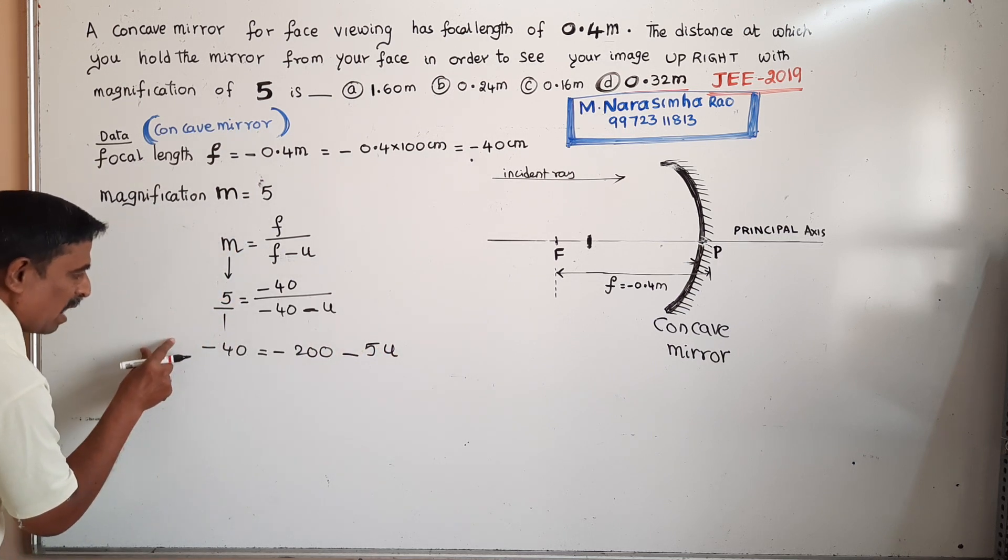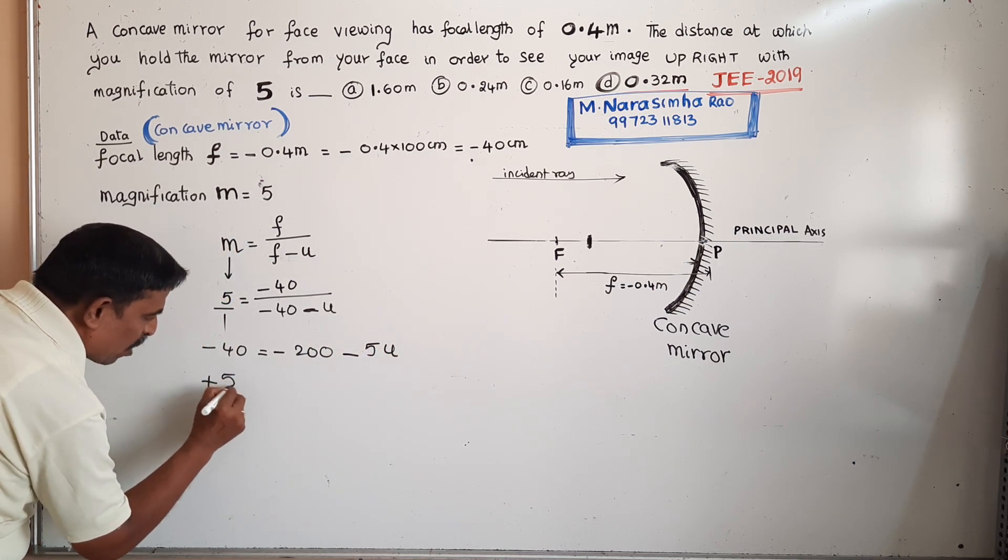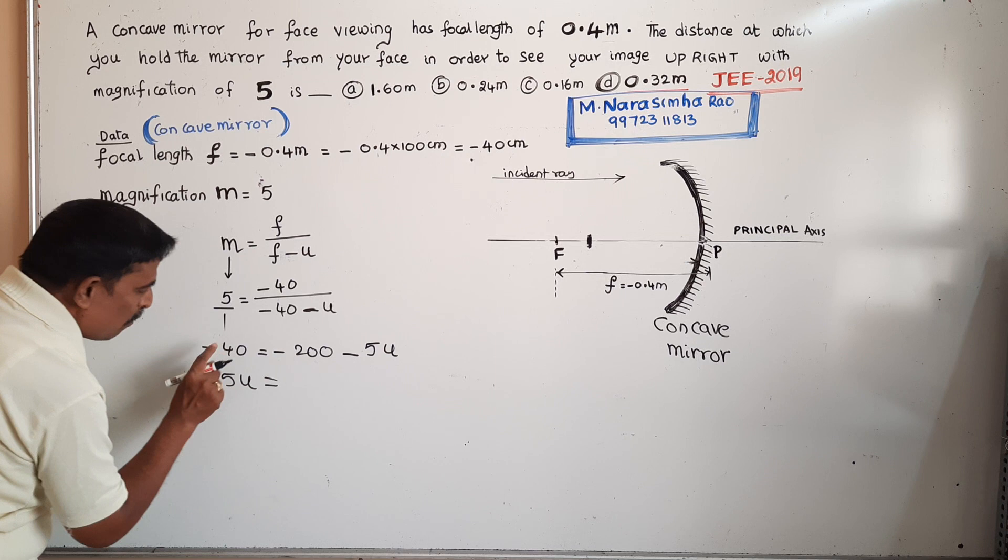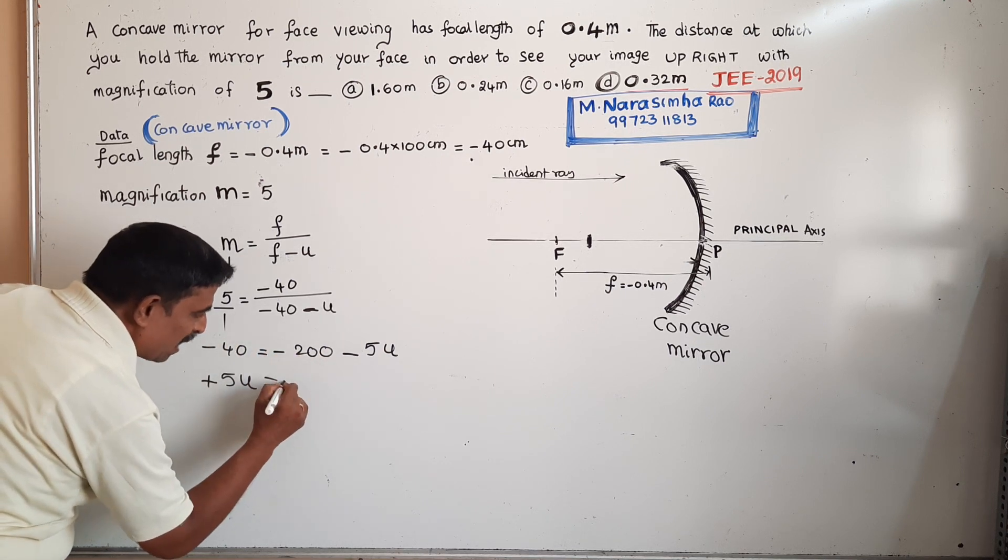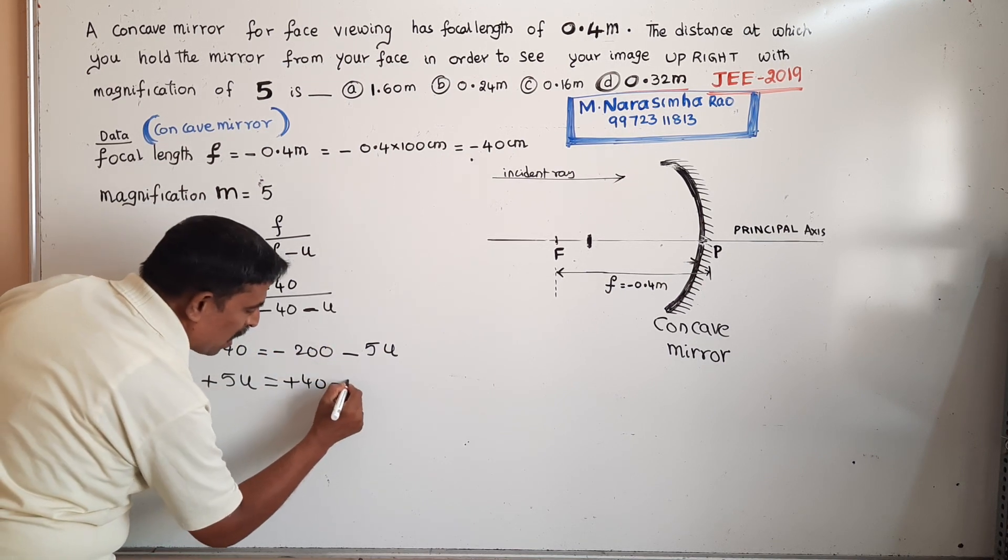Moving minus 5u to the left side gives plus 5u. Moving minus 40 to the right side gives plus 40 minus 200.